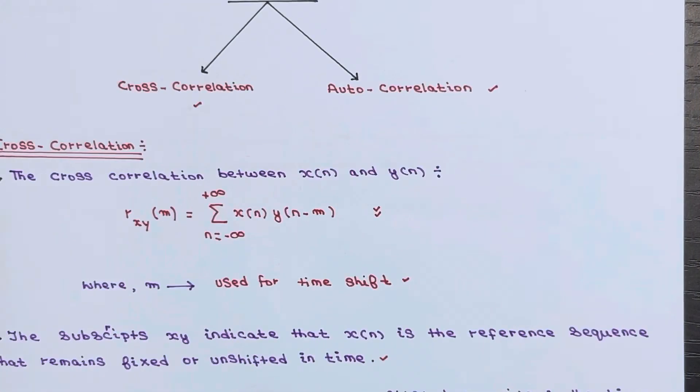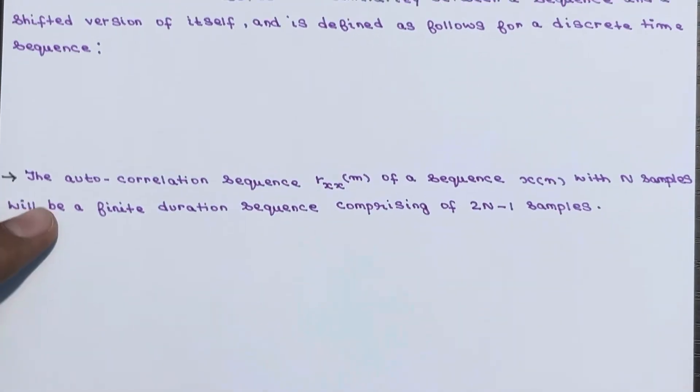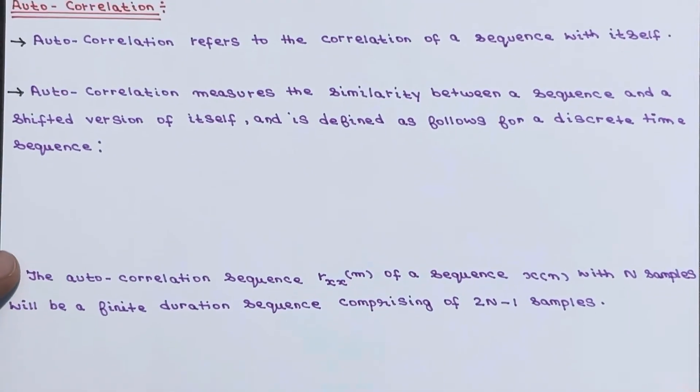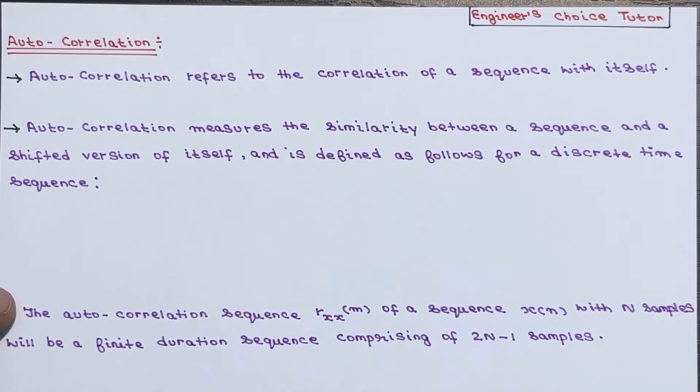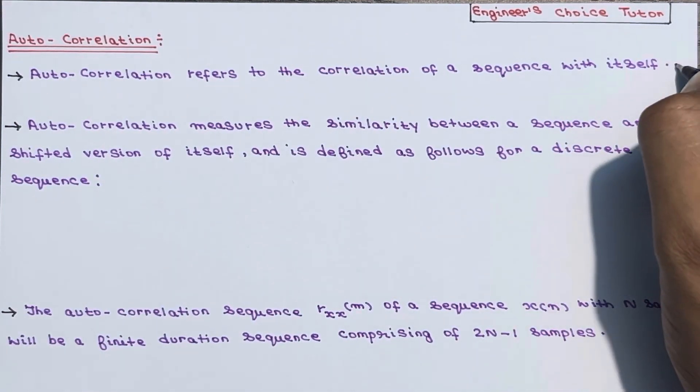And another one is basically auto-correlation. So let us see that also. The name itself is enough to define this. Auto-correlation, it means it refers to the correlation of a sequence with itself. So auto-correlation refers to the correlation of a sequence with itself only.